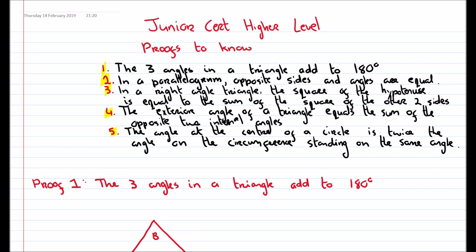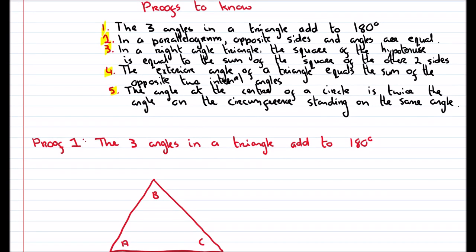The first one is that the three angles in a triangle add to 180. The second one: in a parallelogram, opposite sides and angles are equal. Three: in a right-angled triangle, the square of the hypotenuse is equal to the sum of the squares of the other two sides — that's basically a proof of Pythagoras' theorem. Four: the exterior angle of a triangle equals the sum of the opposite two interior angles. And the fifth one: the angle at the centre of a circle is twice the angle on the circumference standing on the same arc.